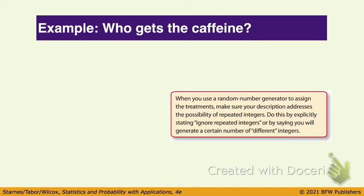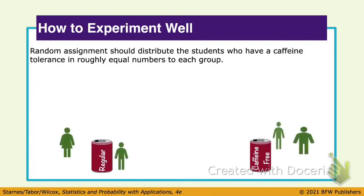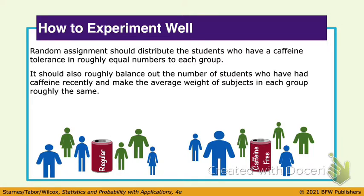How could we assign people with a random number generator? You number each person, label each person, then use the number generator and ignore repeats. For example, all even numbers get assigned to group A, all odd numbers get assigned to group B. Random assignment should distribute the students into equal groups — hopefully some girls are in both groups, some boys are in both groups, some caffeine-tolerant people are in both groups, some overweight and underweight people are in each group. I want roughly equivalent groups, balancing out all these variables by random assignment.